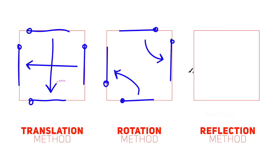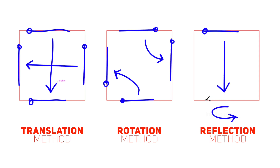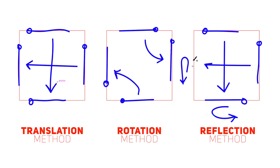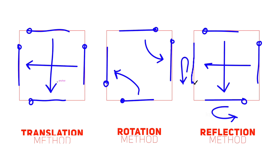In the reflection method — in other words, the mirror method — whatever you remove from or add to the geometry, you put it back on the opposite edge, but you mirror it. Basically, you are sliding the portion to the opposite edge and mirroring it within the same edge.